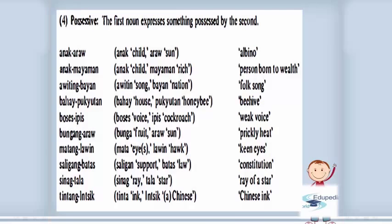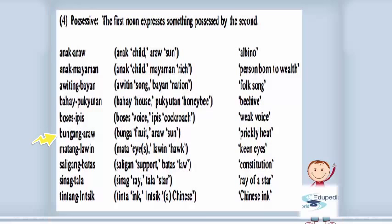Fourth, possessive: the first noun expresses something possessed by the second. Examples: 'anak araw' (albino); 'anak mayaman' (person born to wealth); 'awiting bayan' (folk song); 'bahay pukyutan' (beehive); 'boses ito' (weak voice); 'bungang araw' (prickly heat); 'matang lawin' (keen eyes); 'saligang batas' (constitution); 'sinag tala' (ray of a star); 'tintang intsik' (Chinese ink).